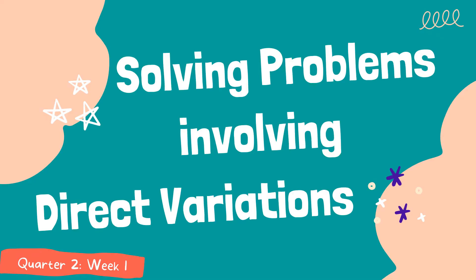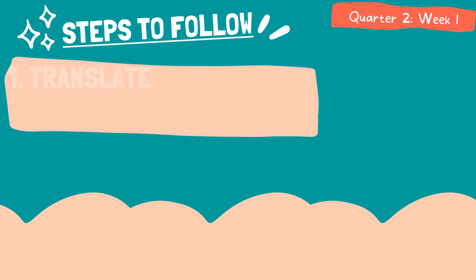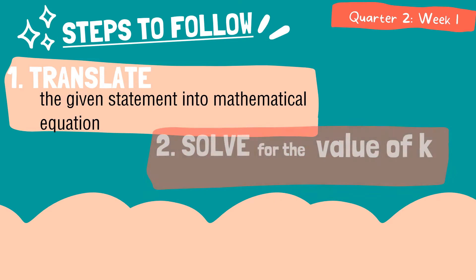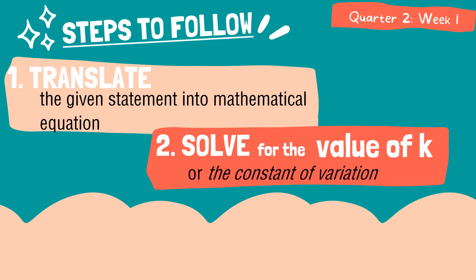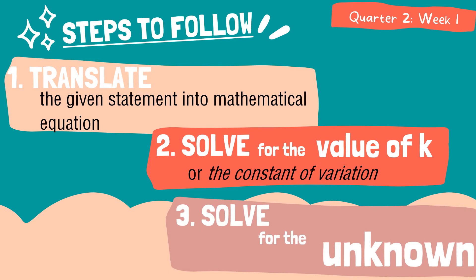Now let us discuss how to solve problems involving direct variation. Here are the three easy steps to follow. First is to translate the given statement into a mathematical equation. Next is to solve for the value of k, which is the constant of variation. And lastly, we will solve for the unknown value.